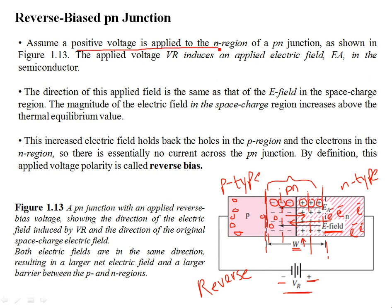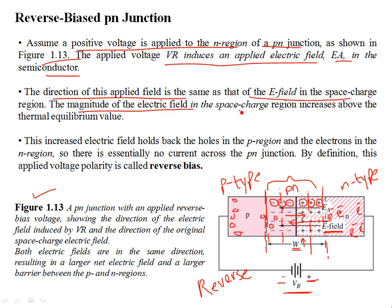Assuming a positive voltage is applied to the N-type region of the PN junction, as shown in figure 1.13, the applied voltage Vr induces an electric field in the semiconductor in the same direction as that of the field produced due to the uncovering of ions on either side. The magnitude of the E-field in the space-charge region increases above the thermal equilibrium value — the thermal equilibrium being when diffusion of holes and electrons was balanced by the concentration gradient due to different doping concentrations.